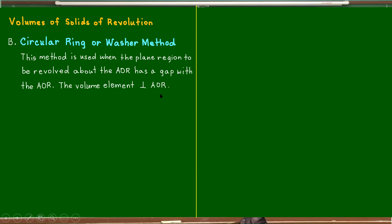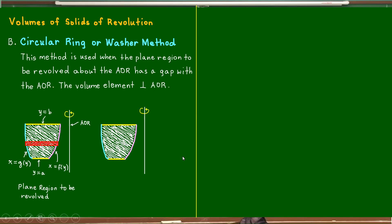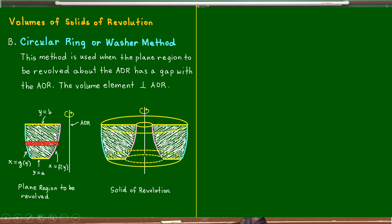The volume element is perpendicular to the axis of revolution. Let us consider a plane region to be revolved about this axis of revolution. This region is bounded from the left side by x equals g of y, on the right side by x equals f of y, above by y equals b, and below by y equals a. The appropriate element is horizontal. Notice that this plane region has a gap with the axis of revolution. When revolved, the area element will form a circular ring or washer.